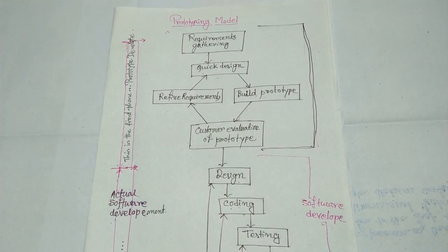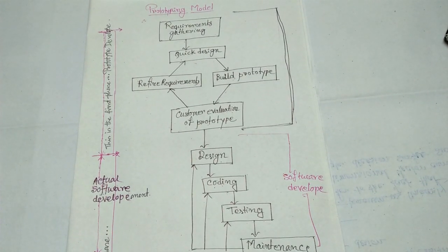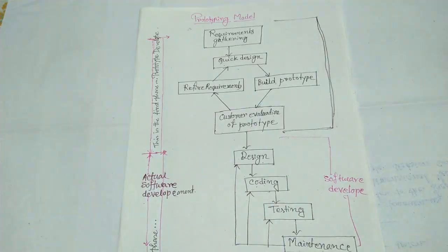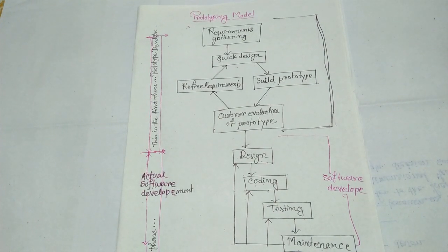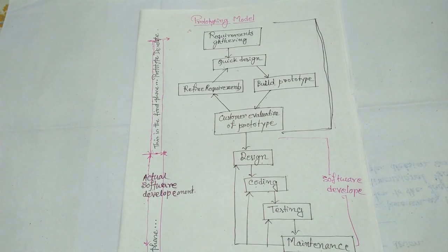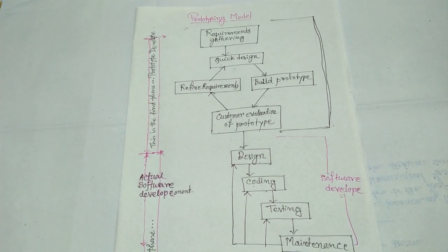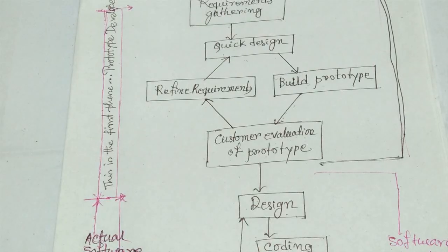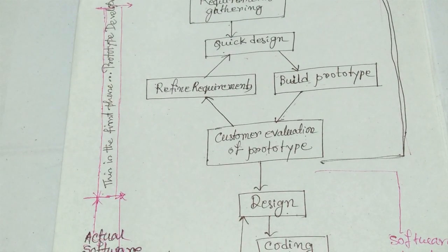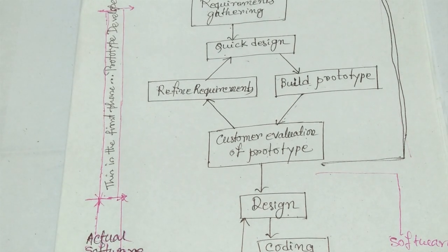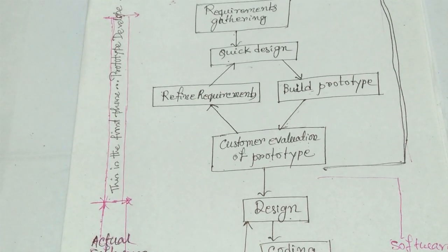Now we start in Hindi. In the first class, we discussed the classical waterfall model and iterative waterfall model. The classical model is a very simple type of model and the first process model. Real software projects with different types of risks cannot be handled by the waterfall model. The waterfall model is used to develop simple software — a word processor is an example. Now we will discuss the prototyping model, which is a little better than the waterfall model.